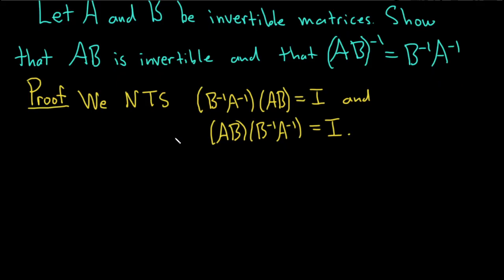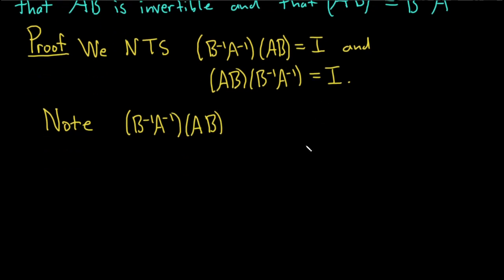OK, let's go ahead and do it very carefully. So note, so let's work with this first one here. So we have B inverse A inverse times AB. And so now we're going to use the fact that matrix multiplication is associative.